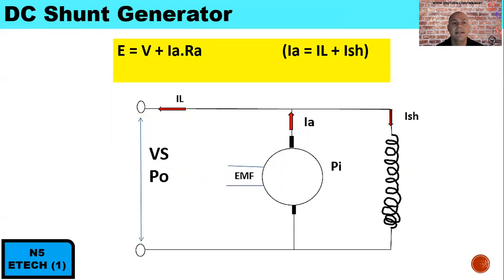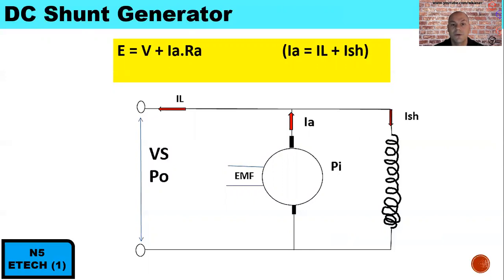The next concept covers DC shunt generators and DC shunt motors. For a shunt generator, it produces armature current and supplies load current, with a small amount of current running through the shunt winding. For a generator, the EMF is always in the same direction as the current, so it is always positive. The generated EMF equals the terminal voltage plus the volt drop across the armature.